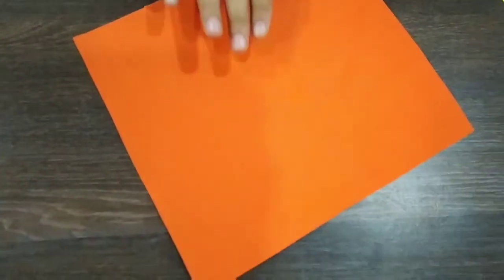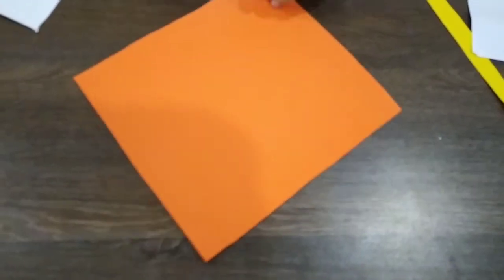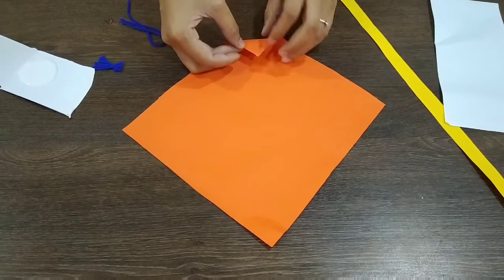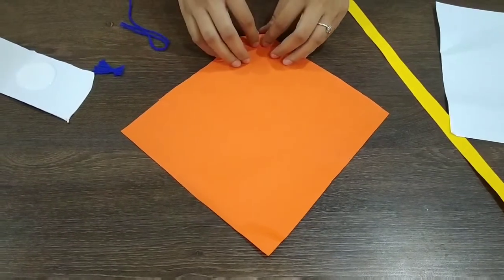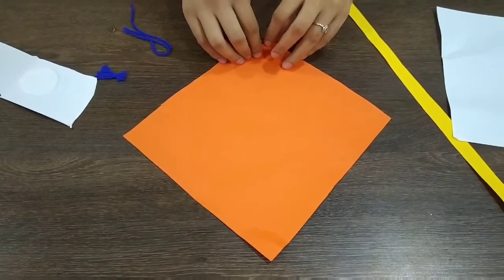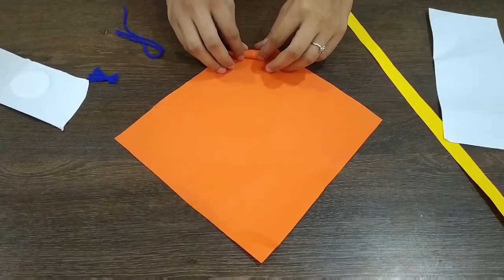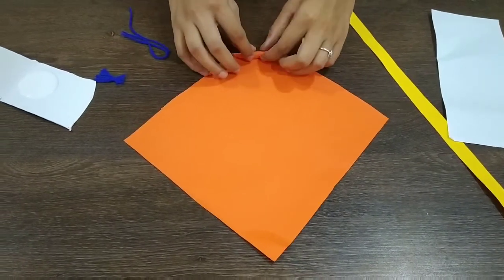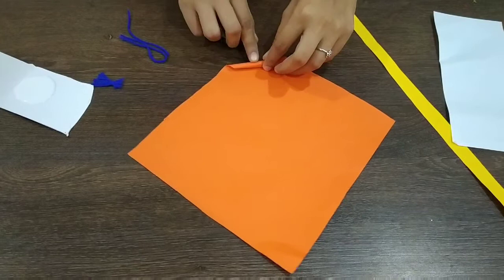First, let's take orange color and we are going to make a flute. So you have to fold this way.